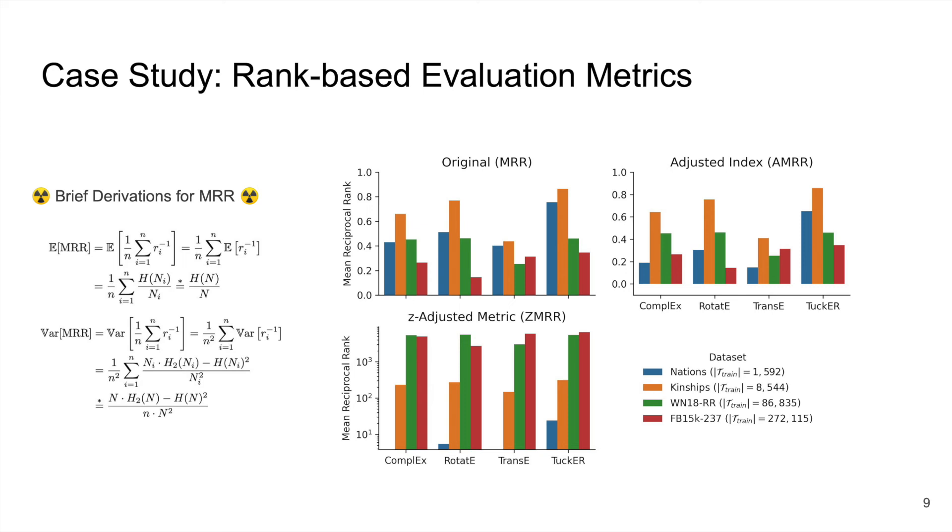Second, the base metric suggests that TuckER performs better on Nations than on WordNet-18 RR, but the adjusted metric and the z-adjusted metric show that when improving comparability by adjusting for size effects, TuckER actually performs better on WordNet-18 RR. Both the base metric and the adjusted metric display an anti-correlation with dataset size that's not present for the z-adjusted metric, disregarding the smallest dataset for which there's a numerical behavior of the adjustments that's slightly erratic.